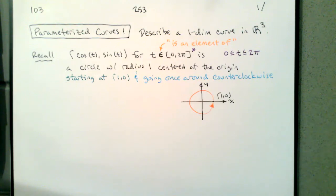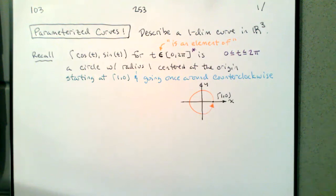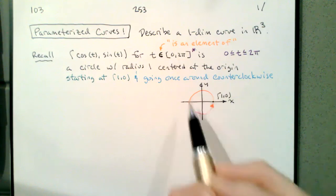Remember that when we parameterize a curve, we give that curve a start and an end, and that means we give that curve a direction. So this is not only the circle with radius one centered at the origin, but the way that we've parameterized it, it's starting off at (1, 0) and going once around counterclockwise. So if we break down the x motion and the y motion, we can think about the graphs of those.